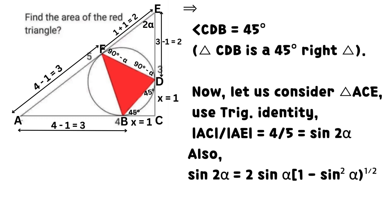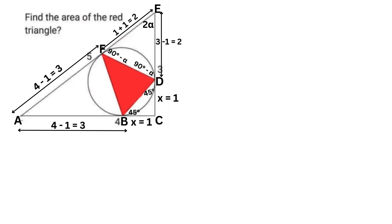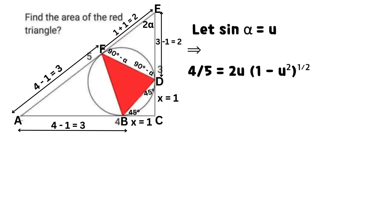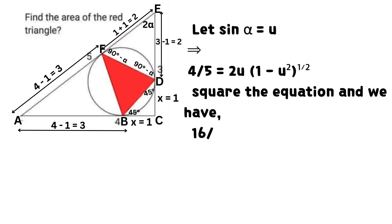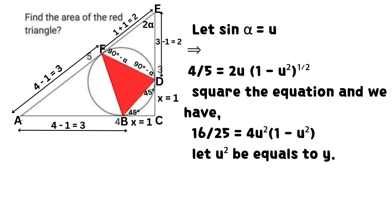Also, sine 2 times alpha equals the product of 2, sine alpha, and the square root of 1 minus sine squared alpha. Squaring the equation, we have 16 divided by 25 equals the product of 4, U squared, and 1 minus U squared.